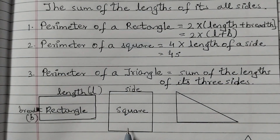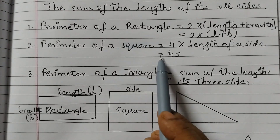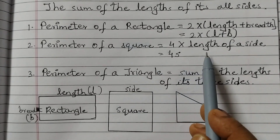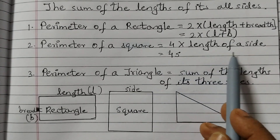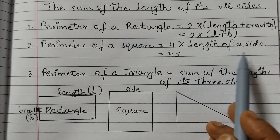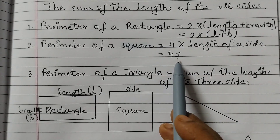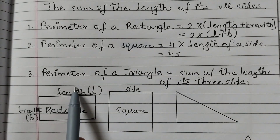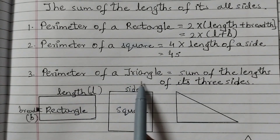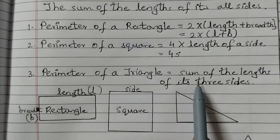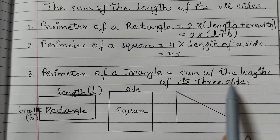The perimeter of a square — a square where all 4 sides are equal — is equal to 4 into the length of a side, or 4 × S, where S is the side.